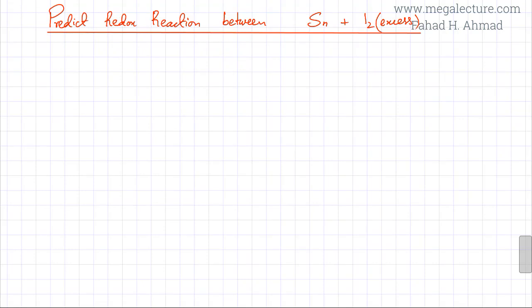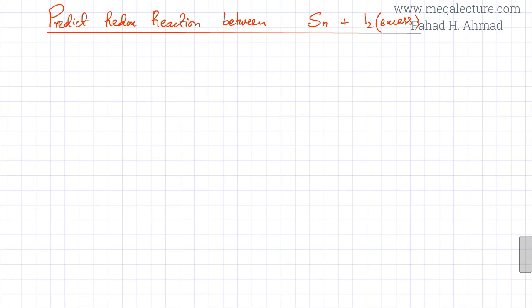In the following lecture, we're going to try and predict the redox reaction between Sn plus I₂ excess. I₂ would be in aqueous state and Sn is solid metal. This is a tricky type of question because it leads to a chain reaction where the products would also react. We're going to see how this chain reaction could be written and predicted using electrode potentials.